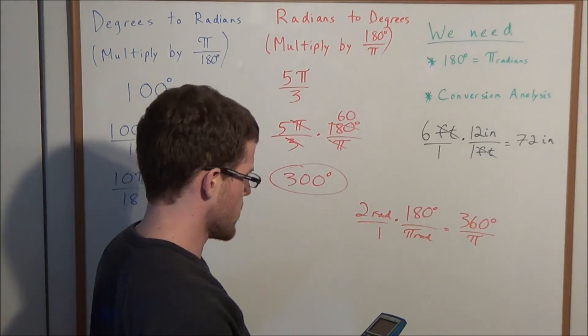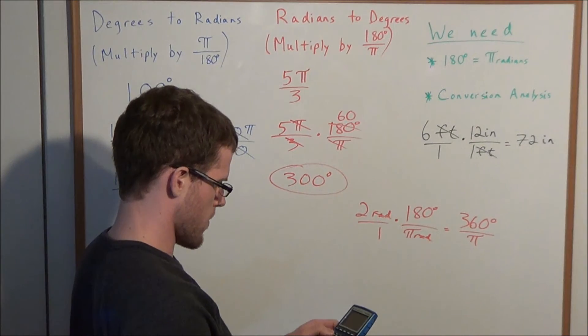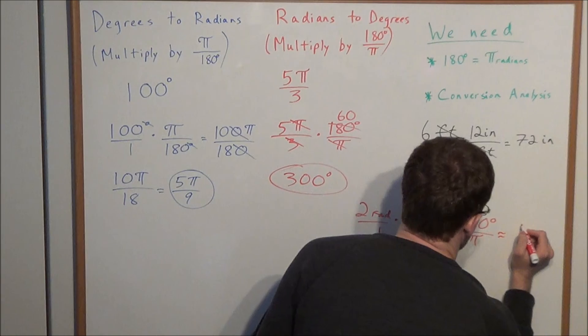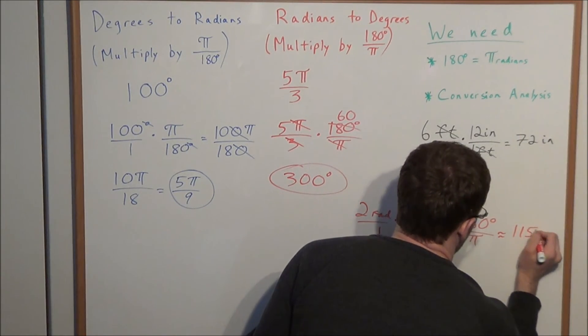We will need a calculator. We'll do 360 degrees divided by π, and this will be roughly, if we round to the nearest degree, it will be roughly 115 degrees.